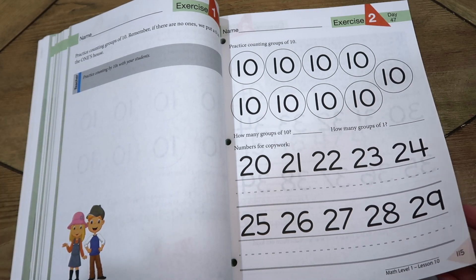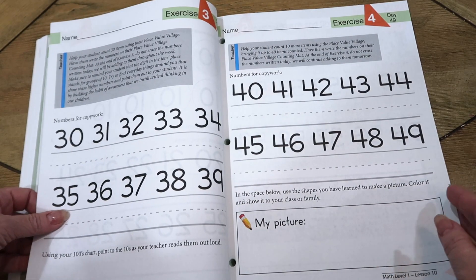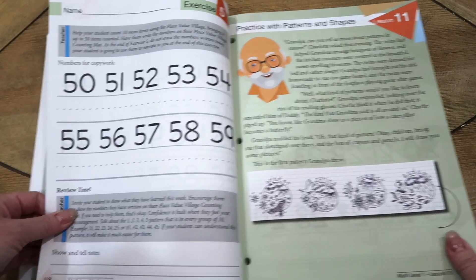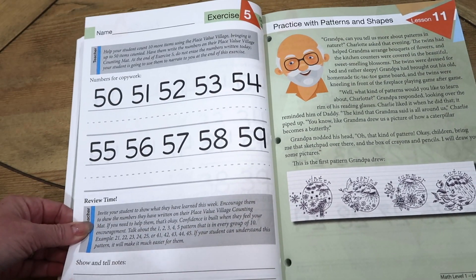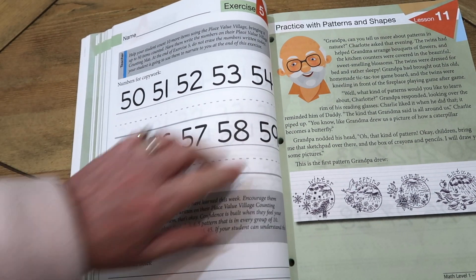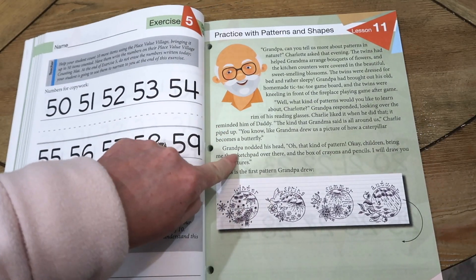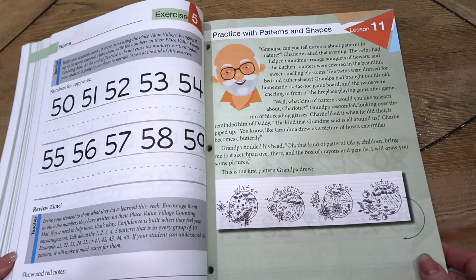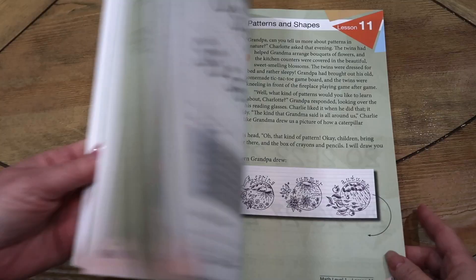They will just kind of camp out on that topic for that whole week. There will be some review mixed in as well. There's a page for every day, then this will be exercise 5 with some review, and then the next week they'll move on to lesson 11. That's the way it works with Math Lessons for Living Education.